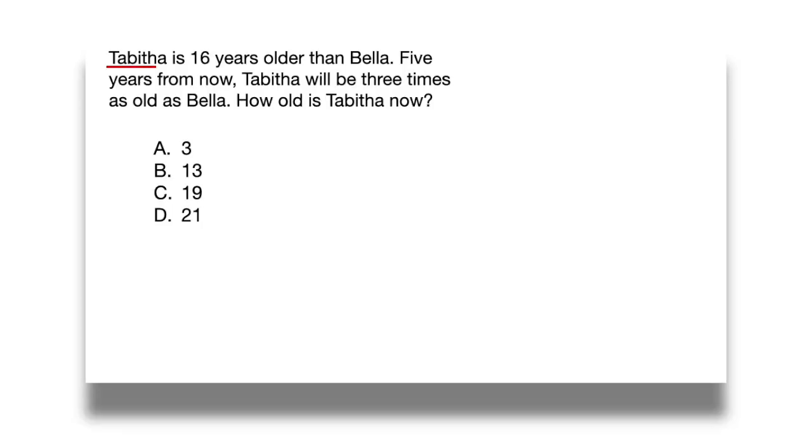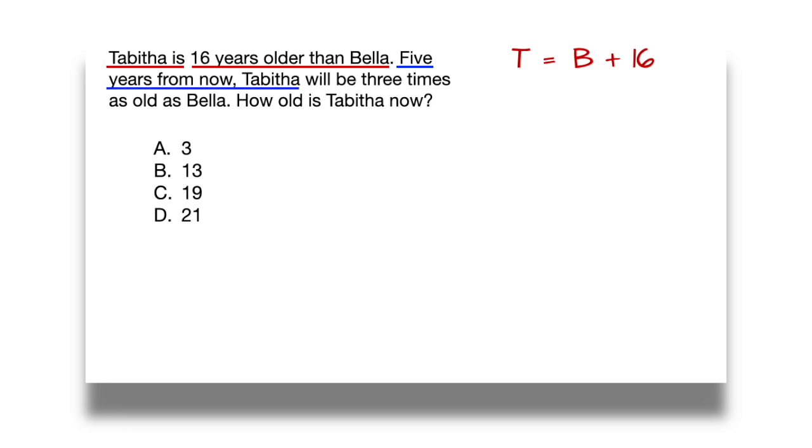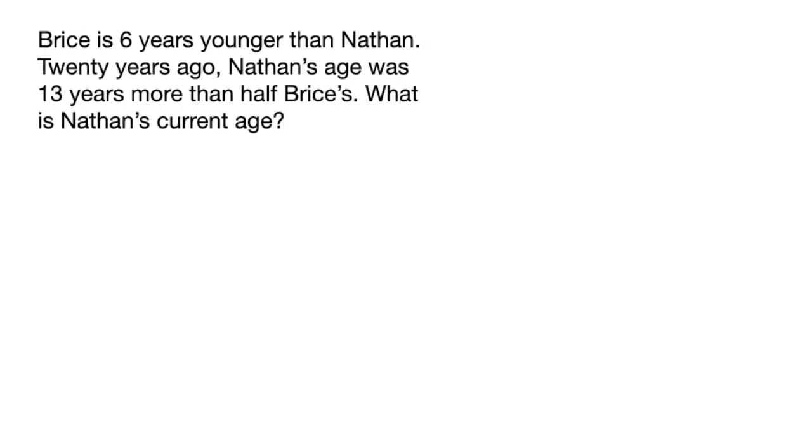While writing what you read sentence by sentence to develop an equation for each sentence, focus on the words is, was, and will be, which all mean equals. This will help you break each sentence apart into sentence fragments to help develop the left and right sides of an equation, whereby the left side of the equation can be what's on the left of is, was, or will be, and the right side of the equation is what's on the right of is, was, or will be.